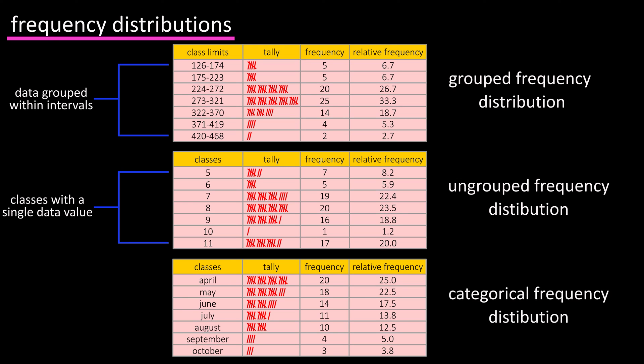And there is a categorical frequency distribution, which is used when the data can be placed into specific categories. As you can see here, the classes in this distribution is comprised of months.